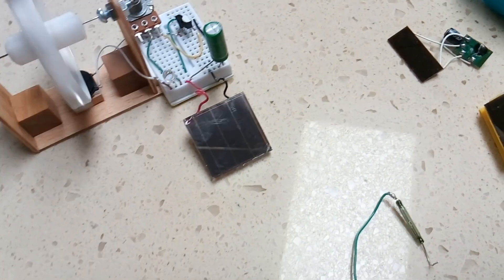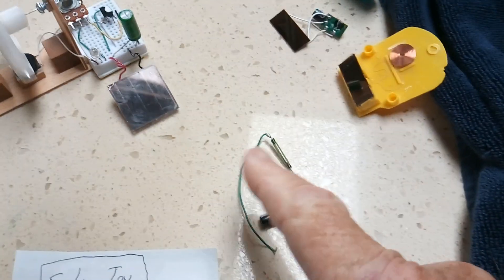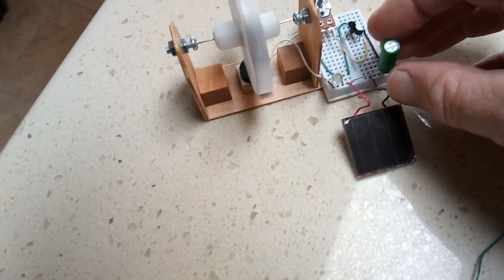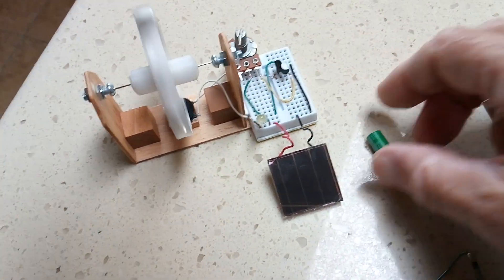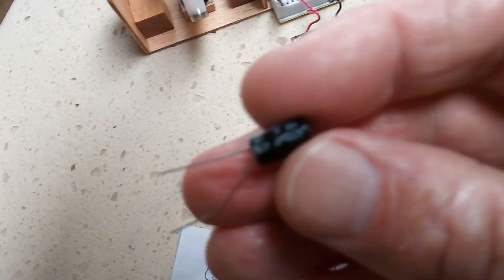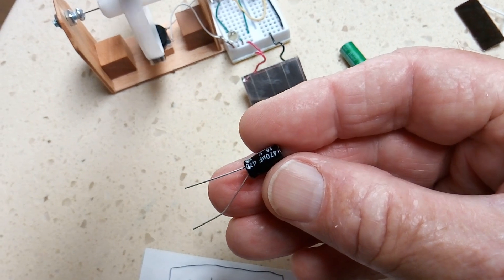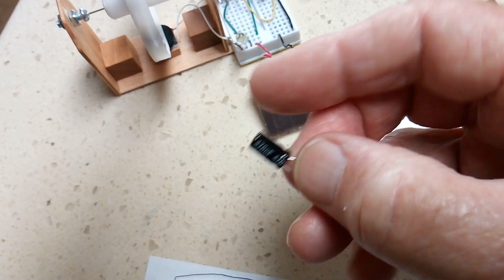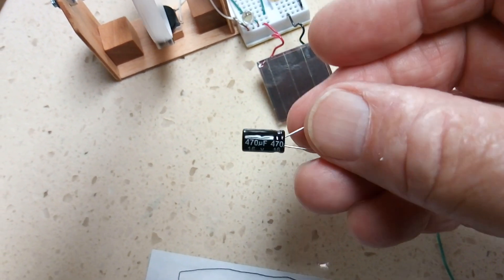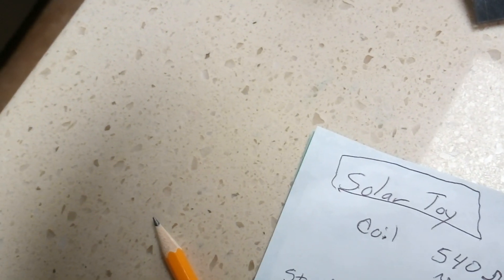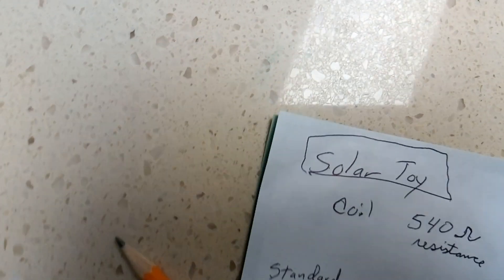This morning I actually got this to run here in the kitchen. You can see the shadow of the skylight here. If I take the super cap out and then put in a 470 microfarad, I think that's a 16 volt cap, just a regular capacitor, this will run if I adjust this just right.